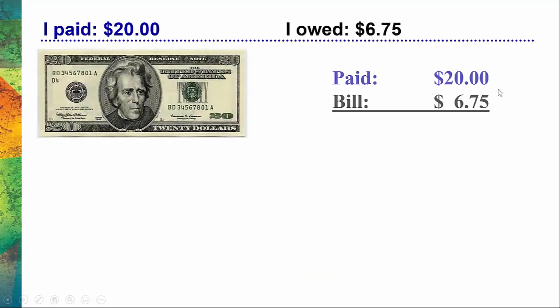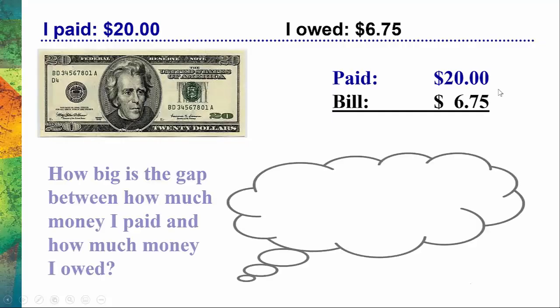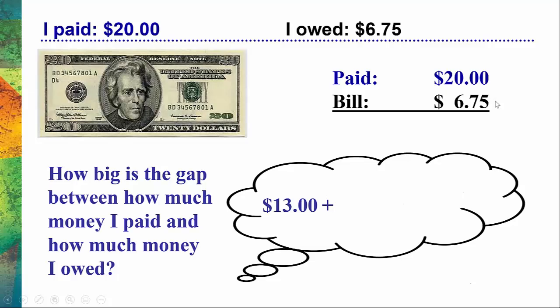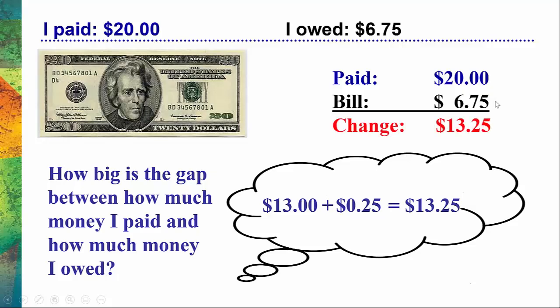Let's go through another example. Let's say I paid $20 and the bill was just $6.75. I'm clearly owed some change. I need to ask, how big is the gap between these two values? I'm going to take $6.75 and round it up to $7. I can easily see in my mind the difference between $20 and $7 is $13. Now I just need to ask, how big is the difference between $6.75 and $7? That's a difference of $0.25. So I'm thinking about $13 plus $0.25 — I add them up and the change is $13.25. You can verify that with a calculator.